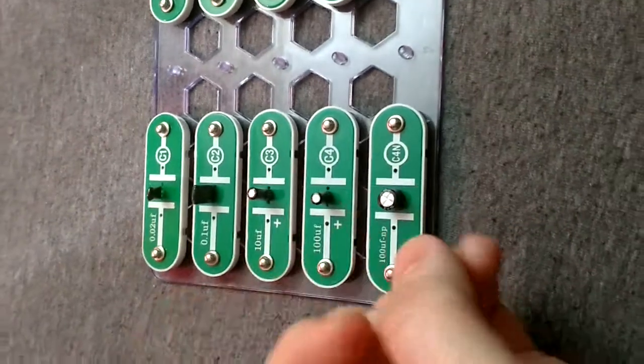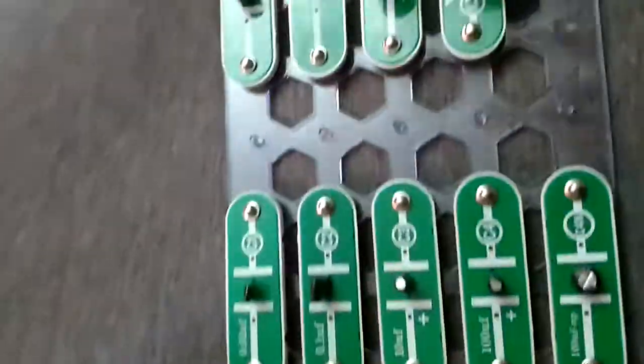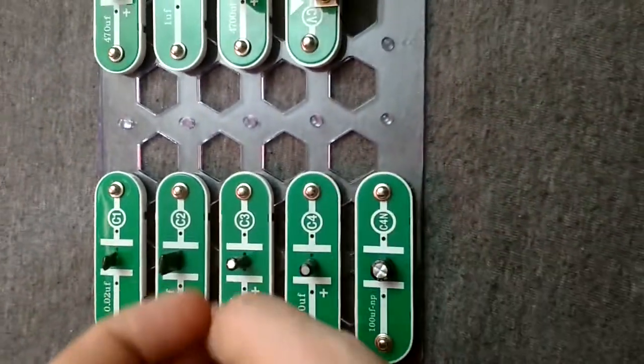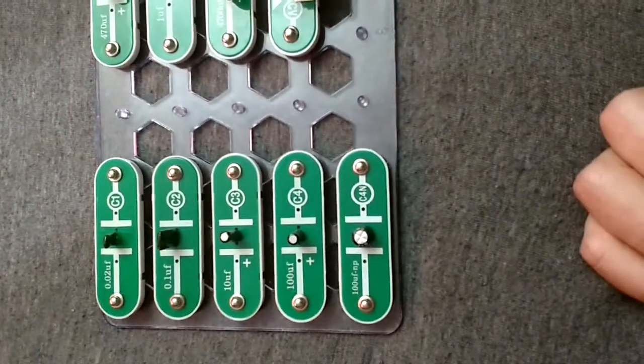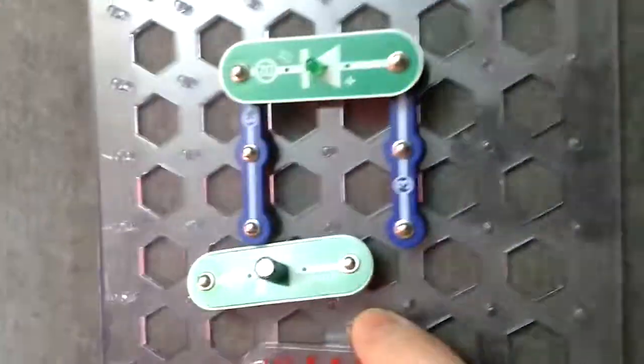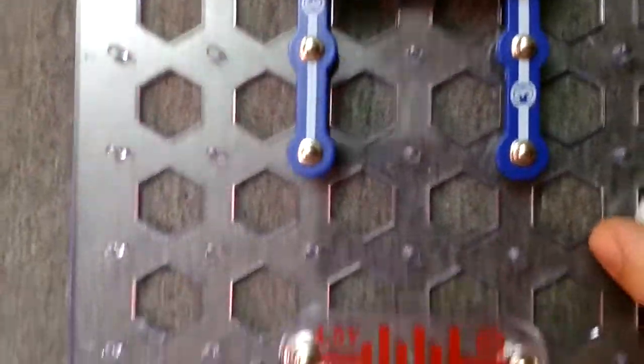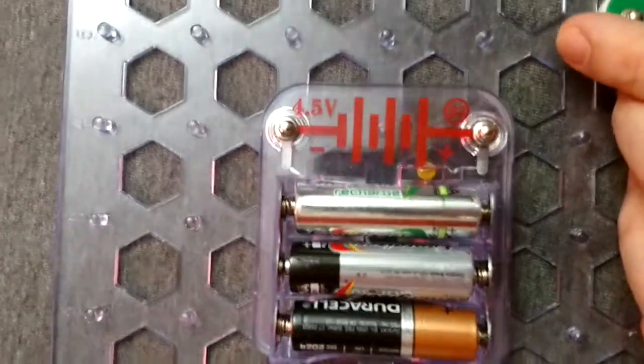So what it does in the meantime is it just builds that charge up, up, up, up, and then eventually once it's full, if it's wired right, it'll then dump all that into the rest of the circuit. Here is a good example of that: we want to power up this LED but we don't want to use this power source directly.